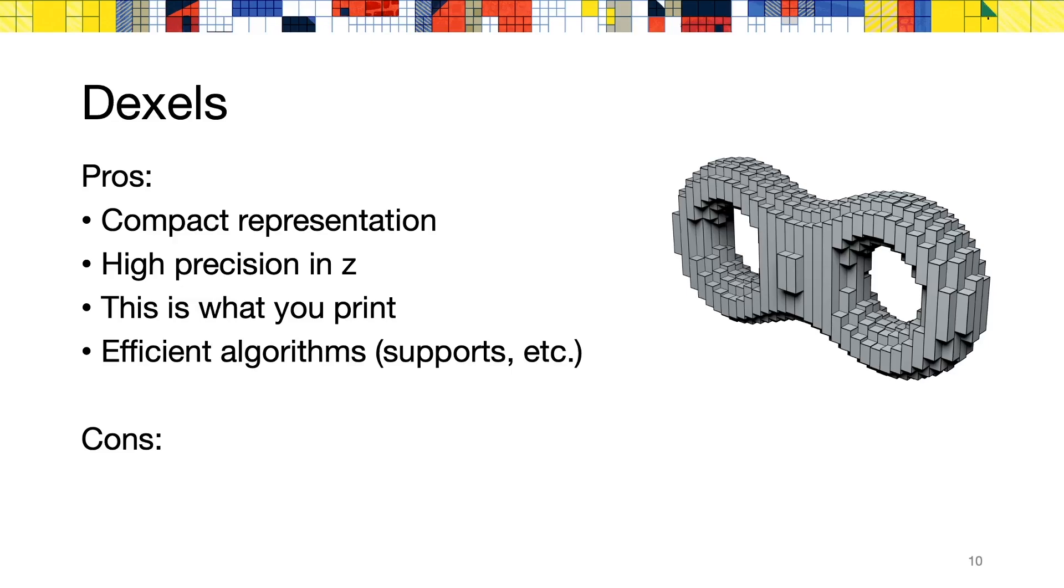There are some drawbacks as well. For example, there is a sampling bias along the direction in which you throw the rays. And since this data structure is not as popular as voxel grids or meshes, we have fewer tools at our disposal.